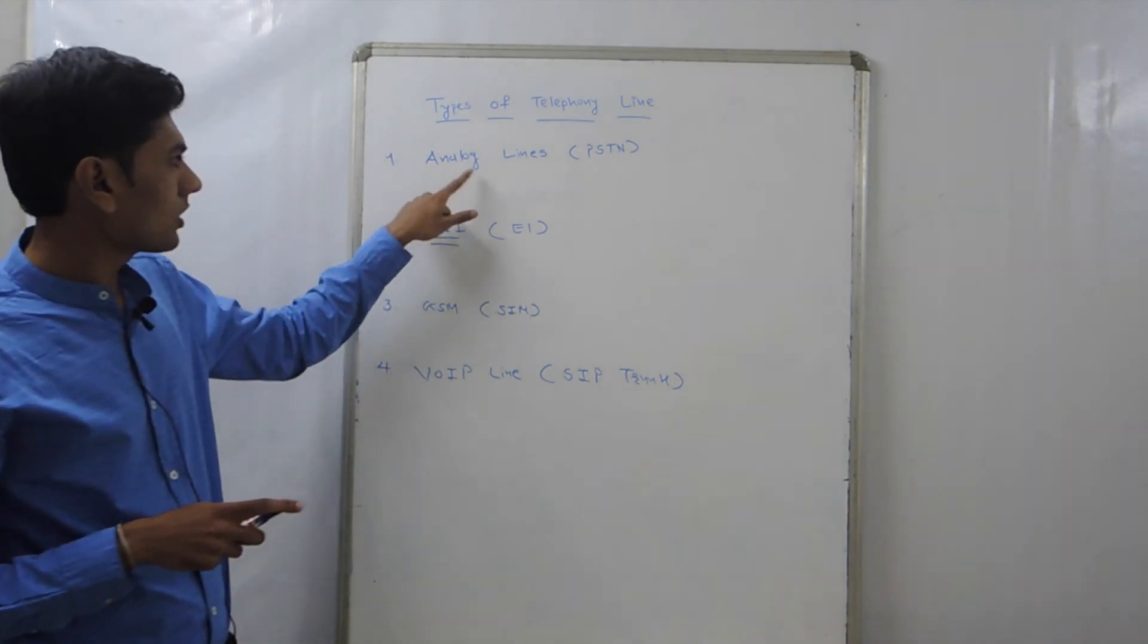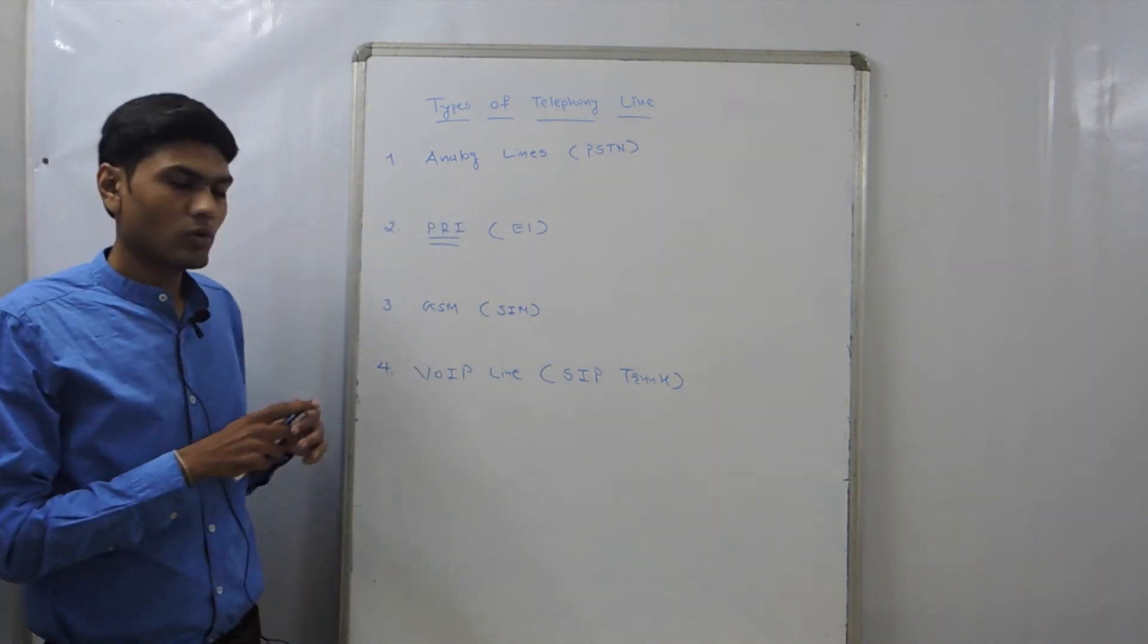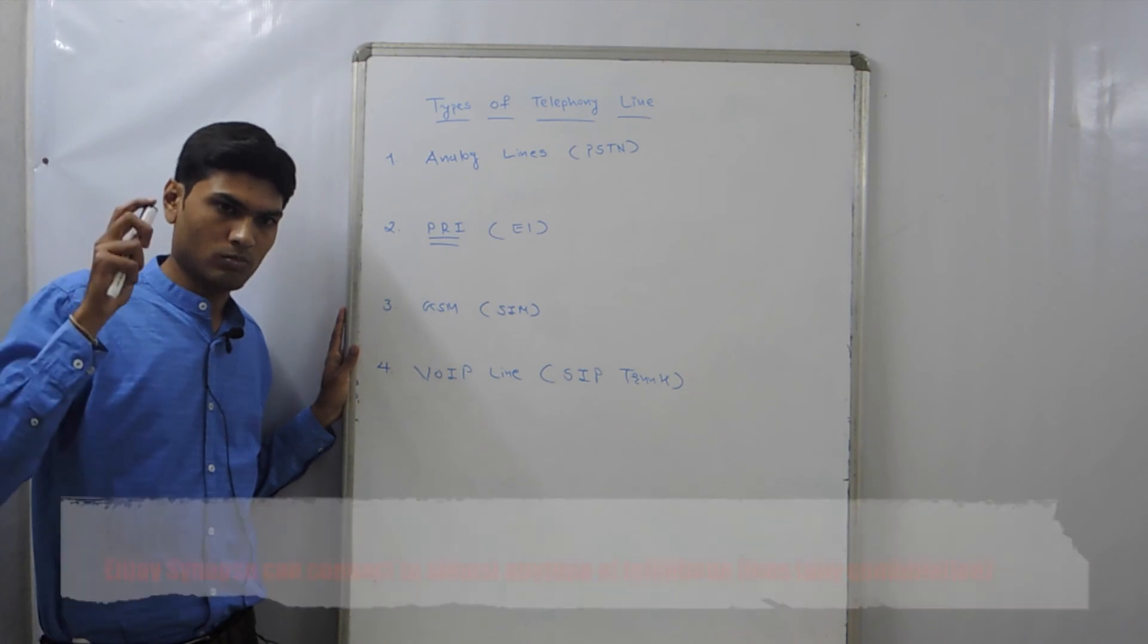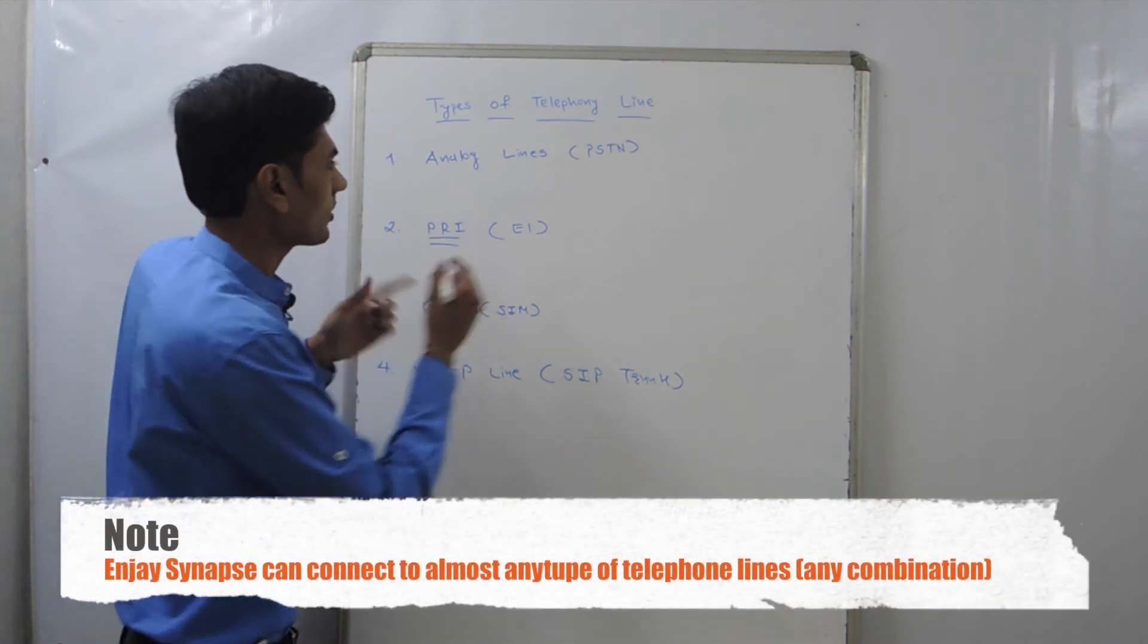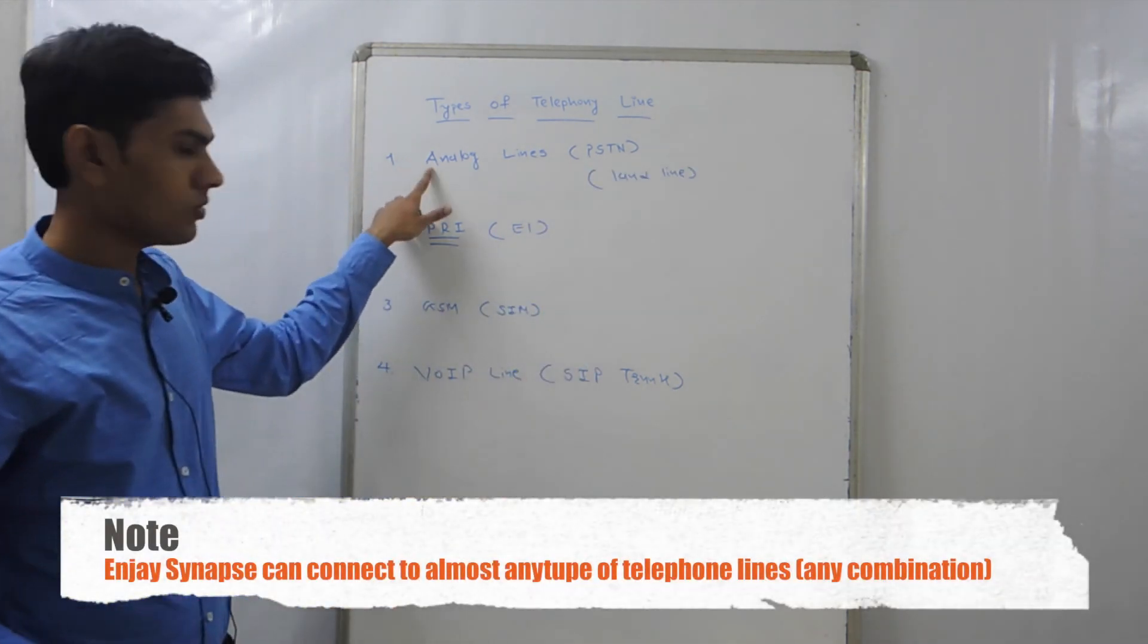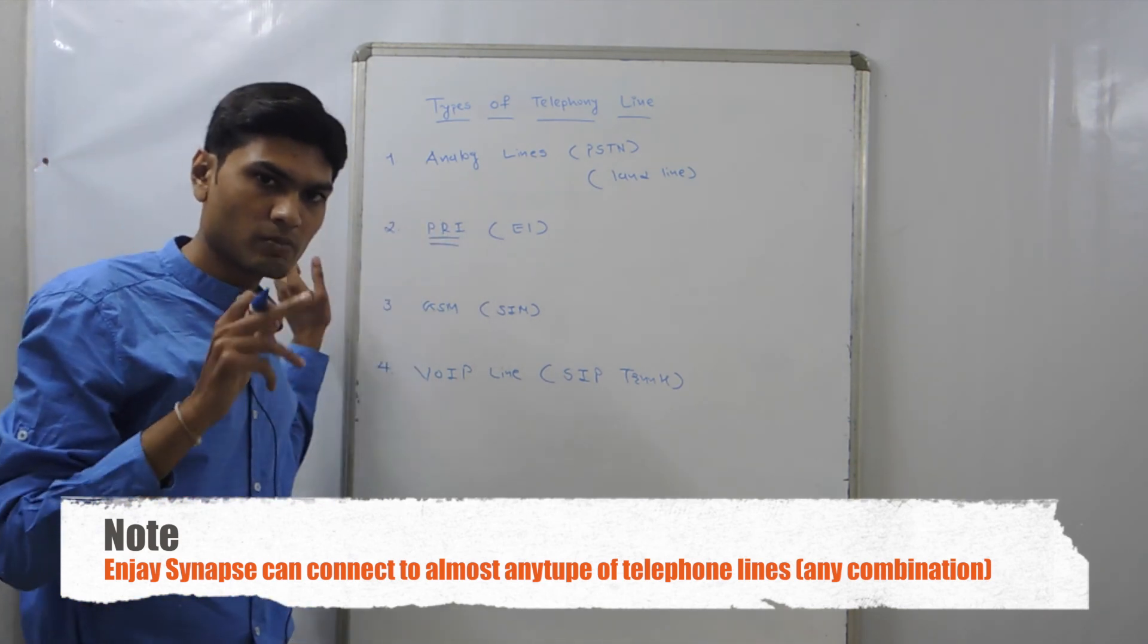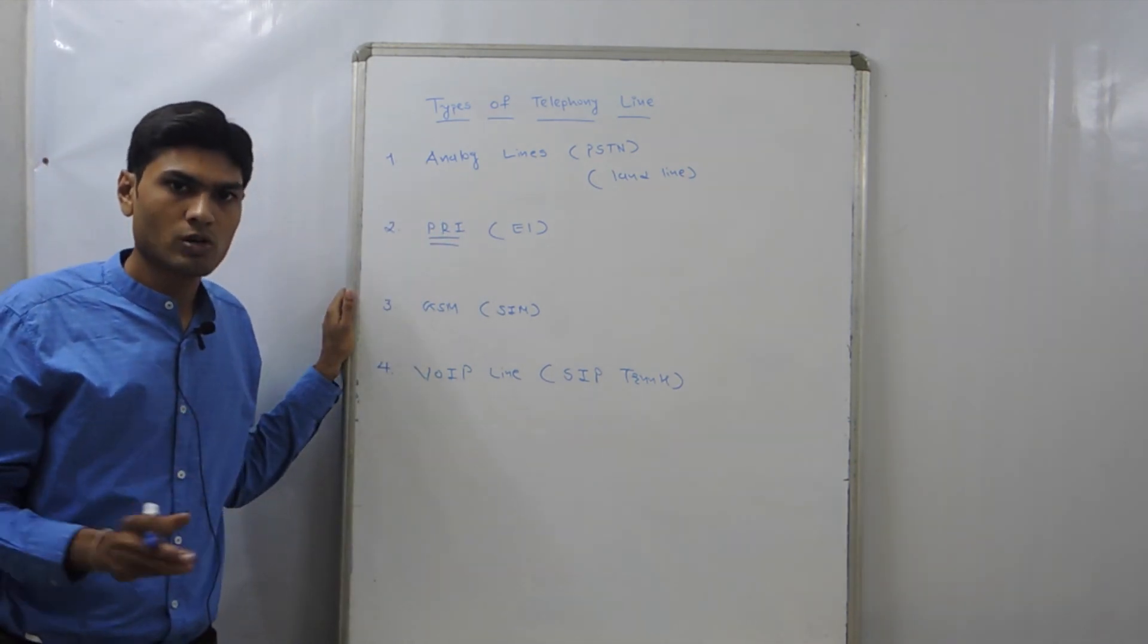In analog lines, which we had at our home before five years, we call it landline. So if we have one analog line, we can make one simultaneous call.